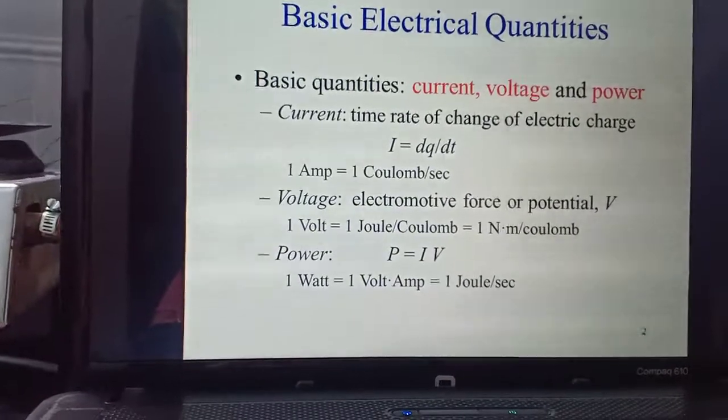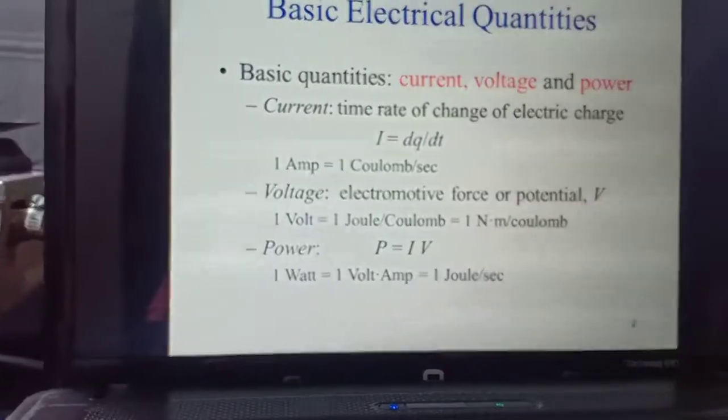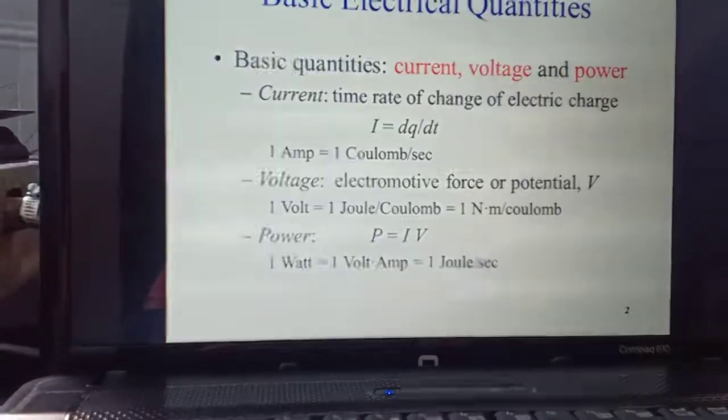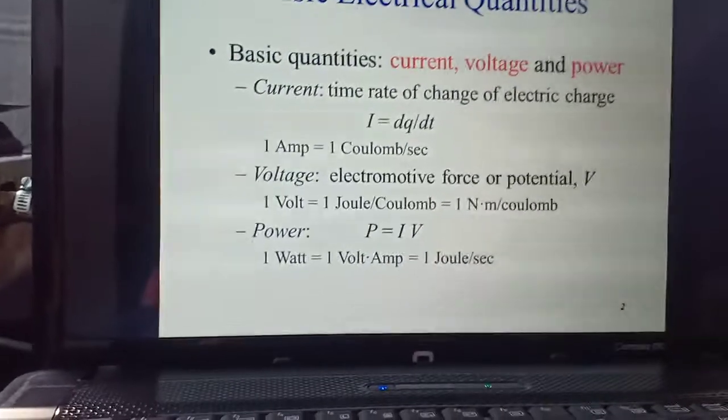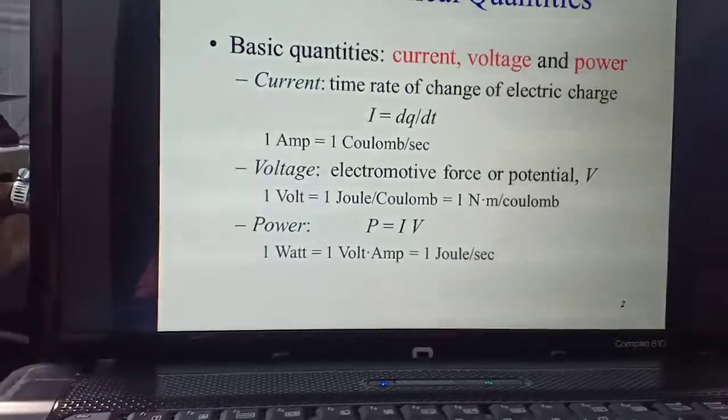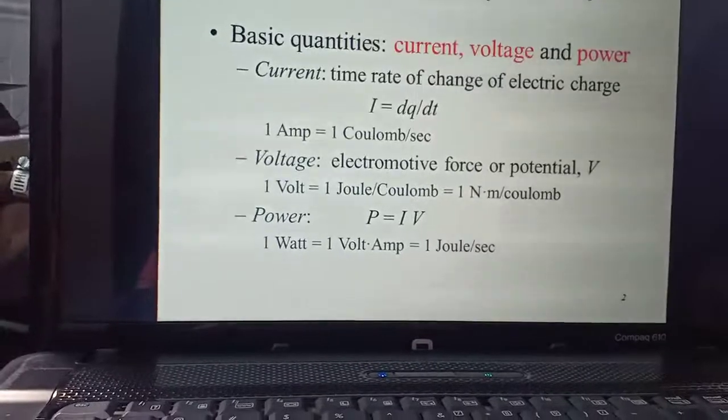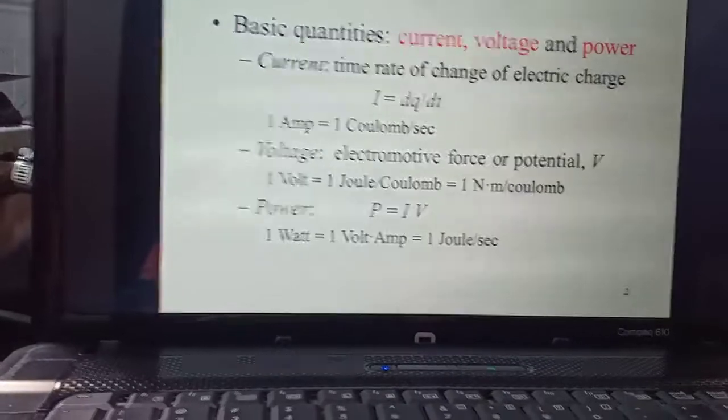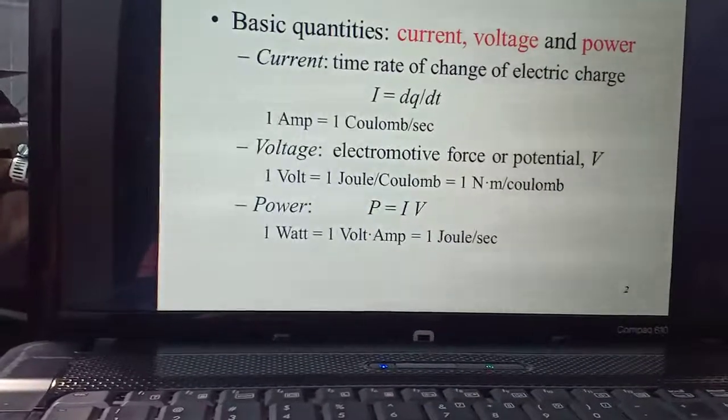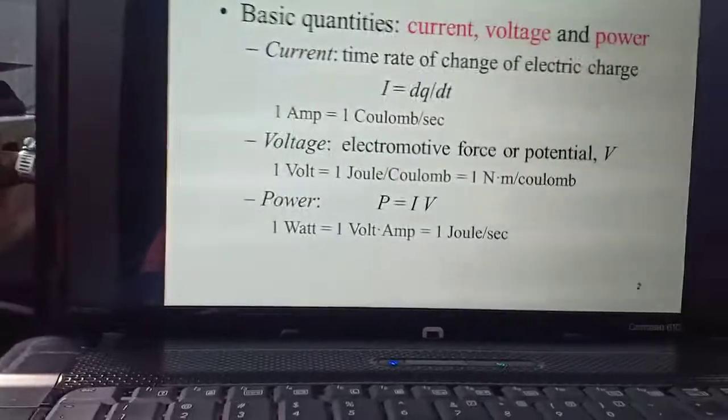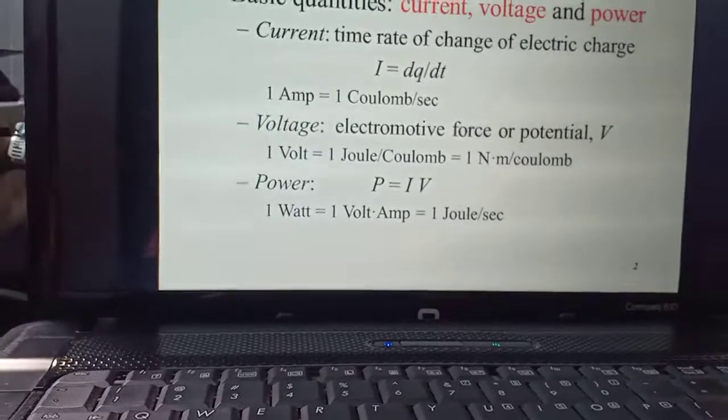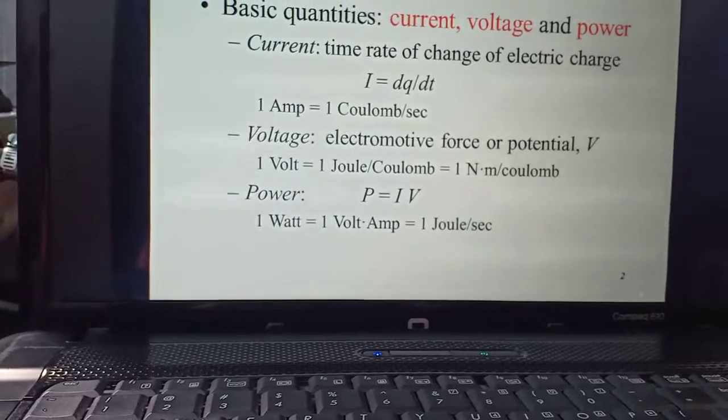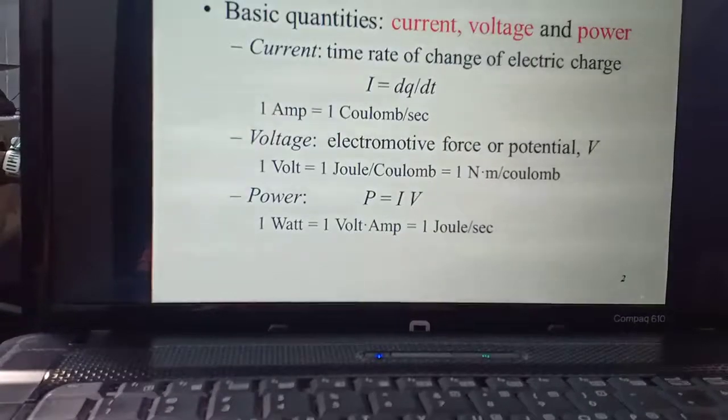Now the third electrical quantity is power. Power is written as the multiplication of current and voltage. One watt, the unit of power, is watt. One watt is equal to one volt into one ampere. Voltage into current. So one volt into one ampere. So while solving these two we get one joule per second. So coulombs will be cancelled out. So one watt is equal to one joule per second.